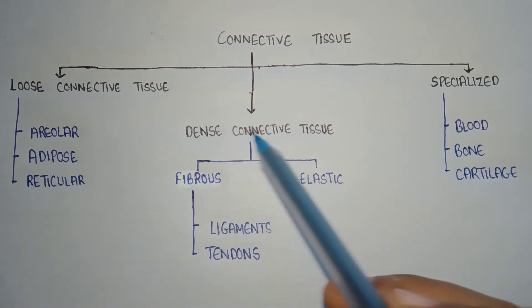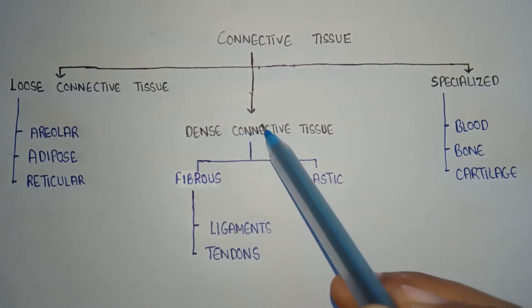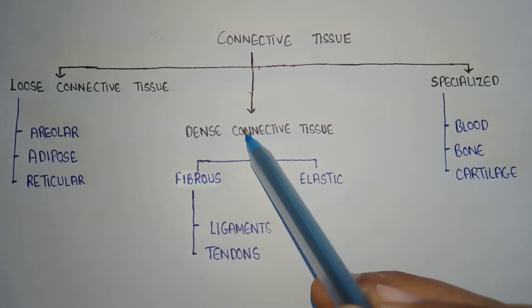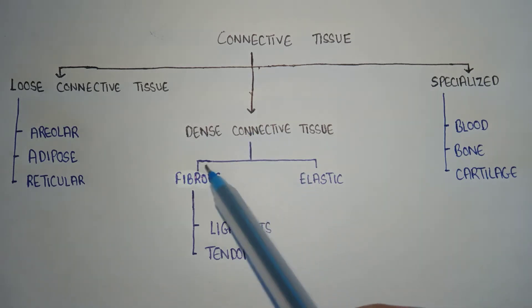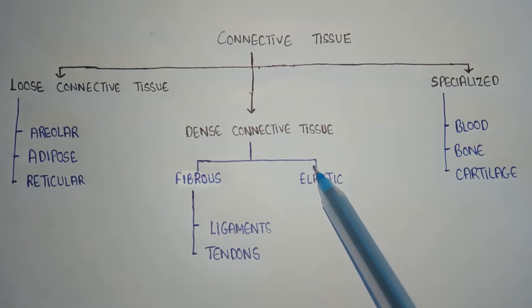Second class is dense connective tissue. In dense connective tissue, the fibers are tightly packed. Dense connective tissue is further divided into two parts: the fibrous tissues and elastic tissue.